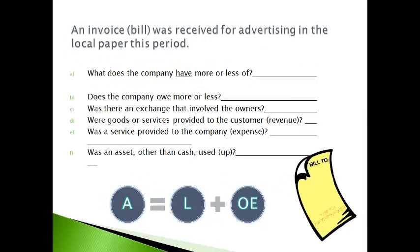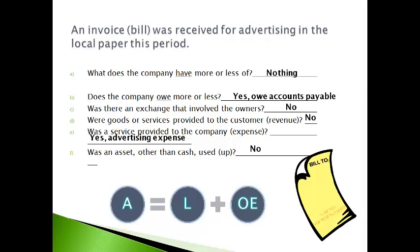The next transaction is the receipt of an invoice for advertising in the local paper this period. The company did not pay for the service this period, and therefore owes the local paper. The liability will be reported as accounts payable. The owners were not directly involved. A customer was not involved. A service was received, and advertising expense will be reported in this period. An asset was not used up, and items the company has did not change. The income statement will report the advertising expense, and the balance sheet reports the expense has not yet been paid as a liability.